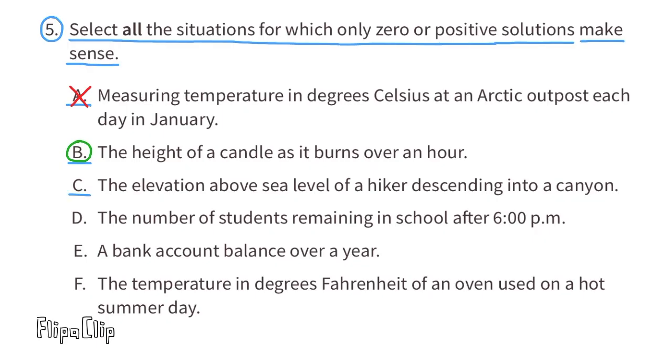C. The elevation above sea level of a hiker descending into a canyon. This one's kind of tricky because they're talking about his location, which is above sea level. However, he is going to descend into the canyon, and it is possible for canyons to be below sea level. The solution for situation C could be 0, positive, or negative, depending on where the hiker is at any time.